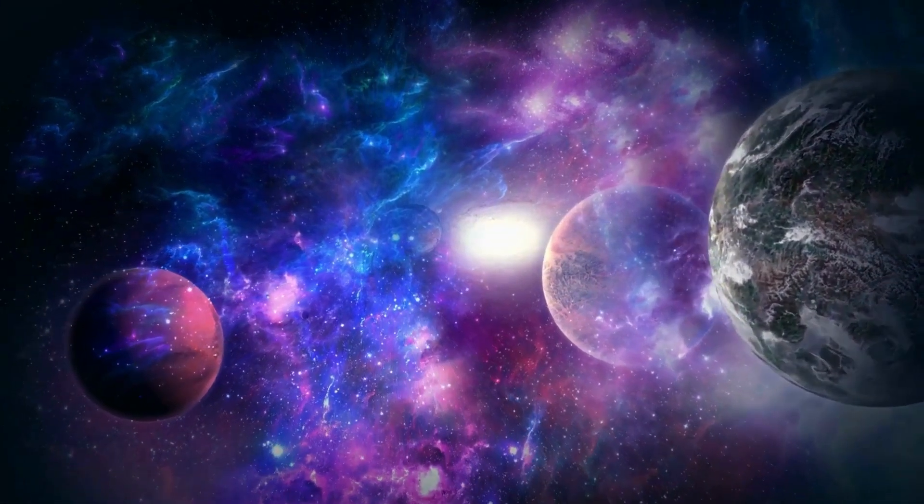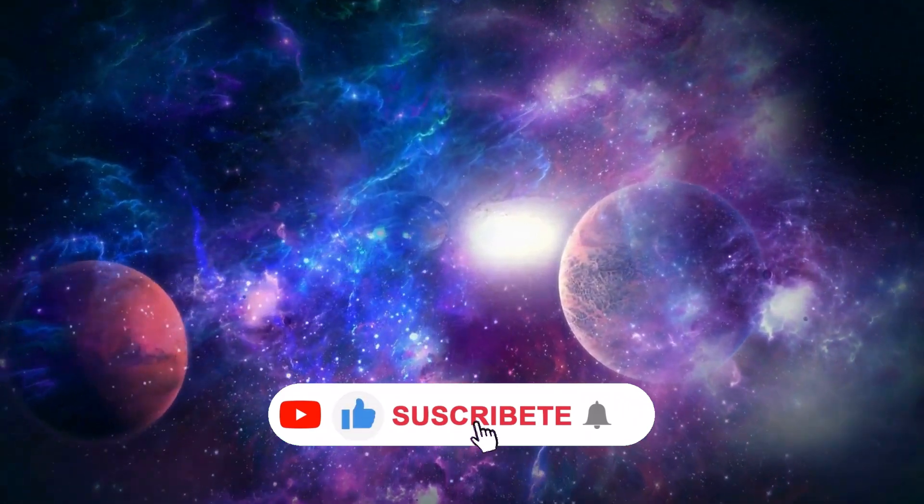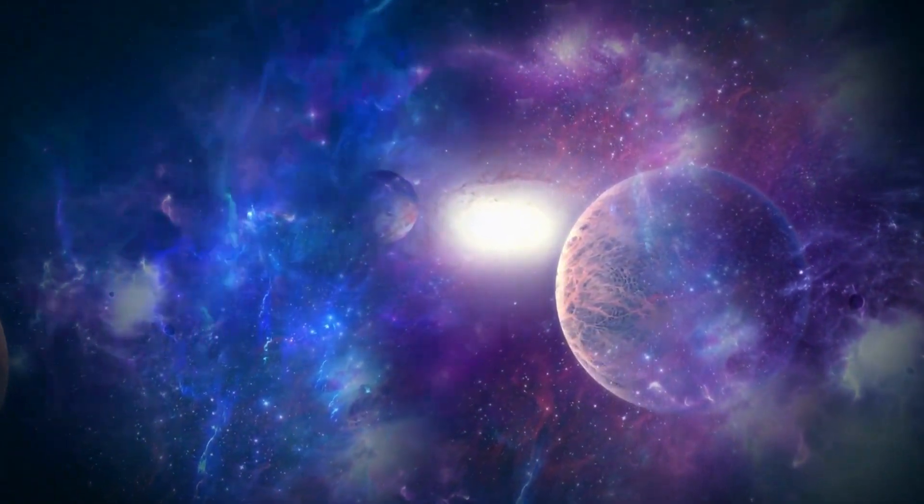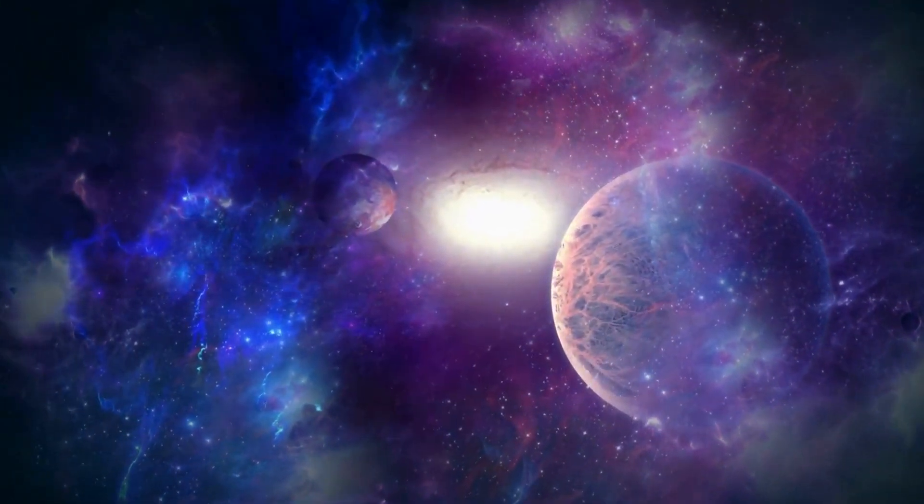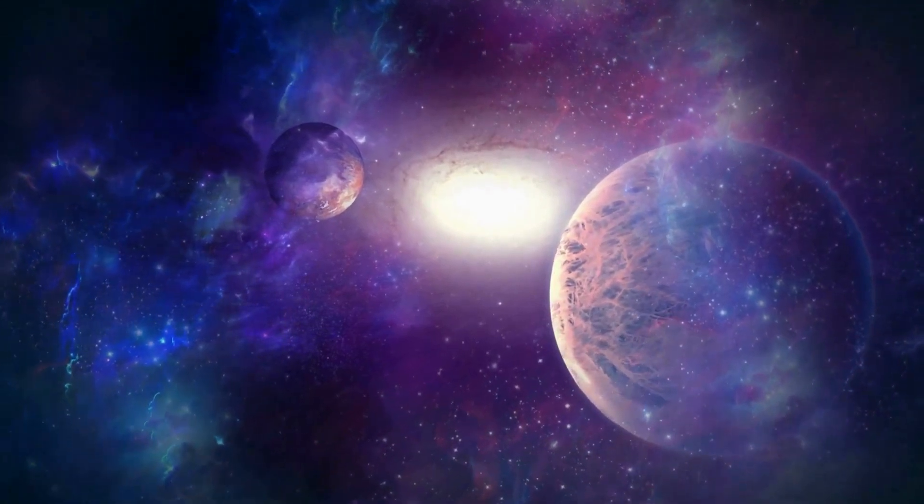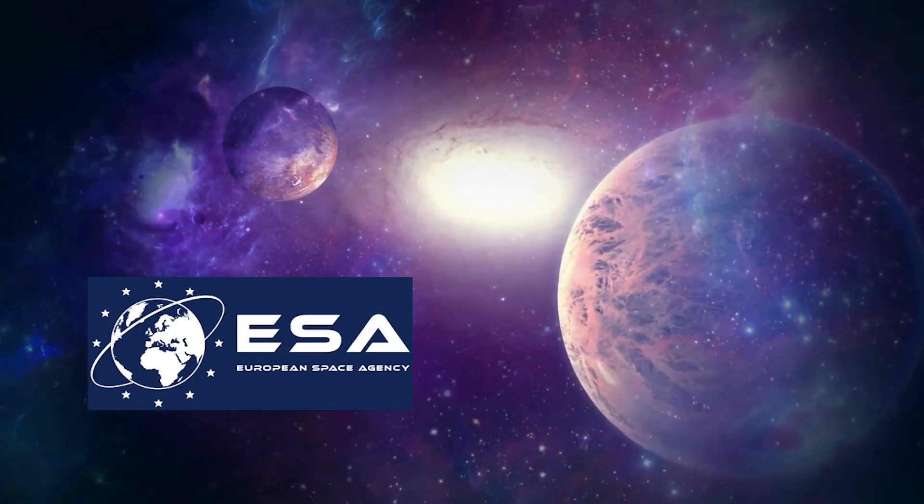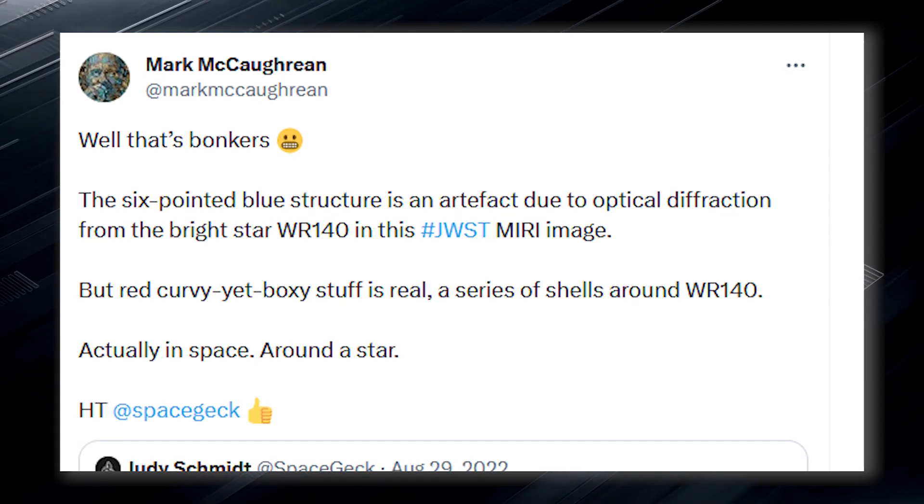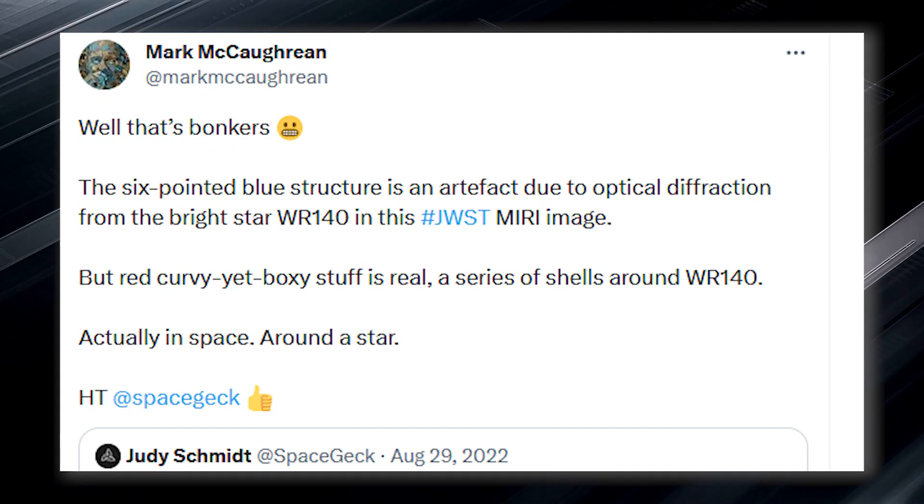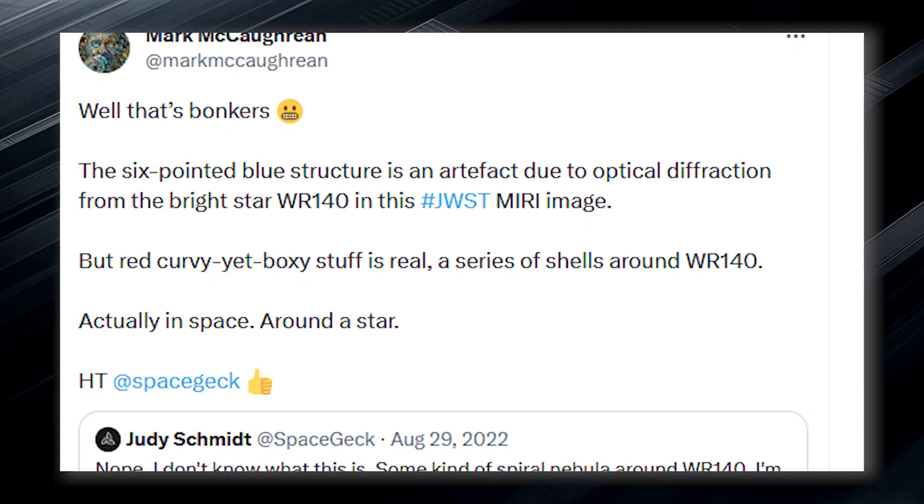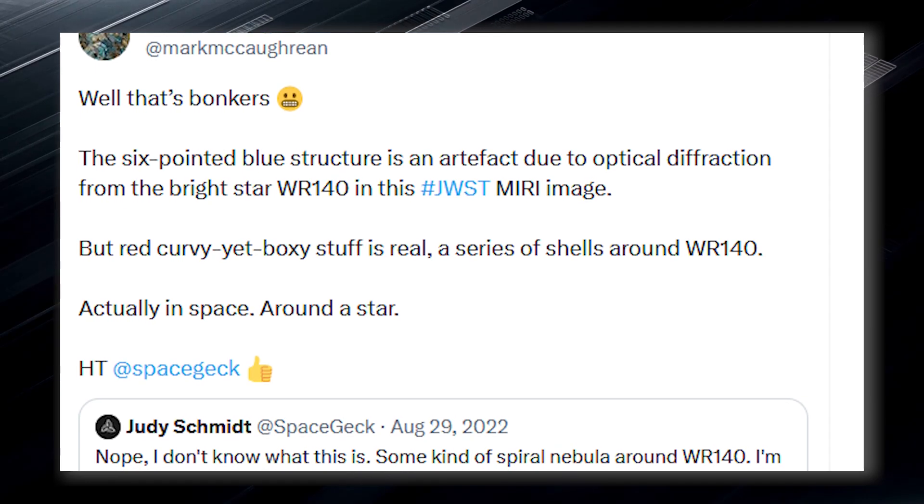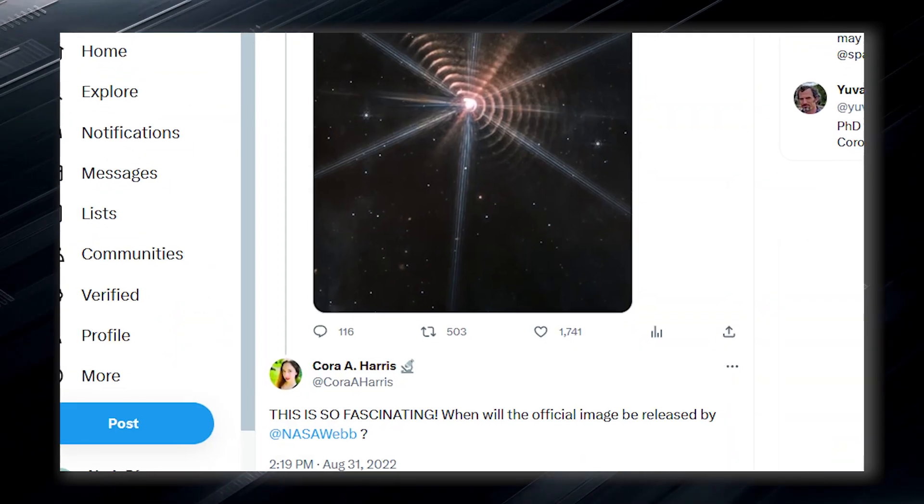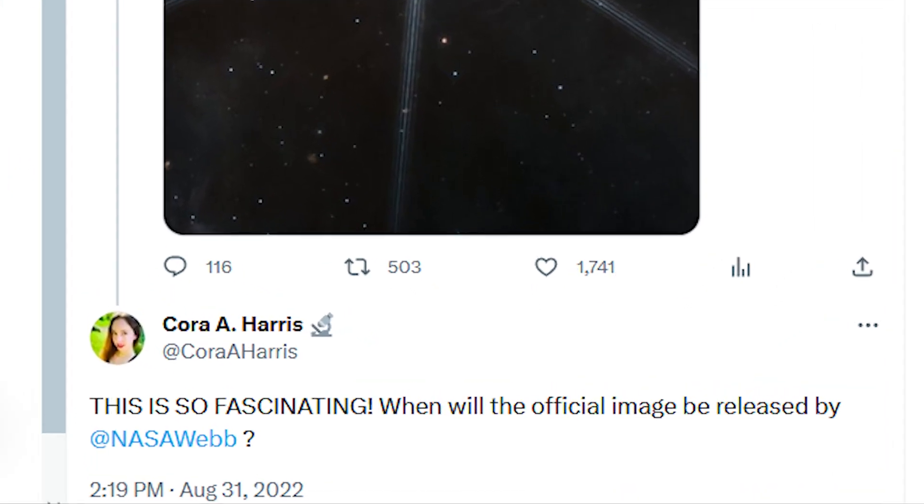Nevertheless, questions remain. Why do they have that particular shape, and why are they so regular? These questions have troubled scientists like Smith, who was not the only one concerned about these puzzling images. Mark, an interdisciplinary scientist with JWST Science Working Group and a science advisor to the European Space Agency, called the feature wacky in a Twitter thread. He explained that the six-pointed blue structure is an artifact due to the optical diffraction from the bright star WR 140 in the image. However, he noted that the red curvature is real and represents a series of shells around WR 140 in space. Although NASA is expected to have something to say about this, it is expected to make a statement soon.